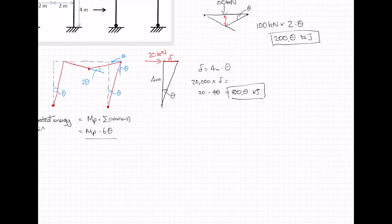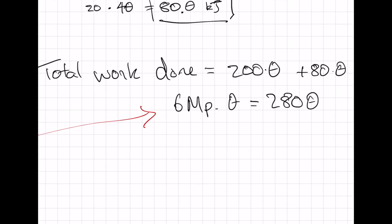So let's equate these. Total work done is equal to 200 theta plus 80 theta, and we equate that to 6 MP theta is equal to 280 theta. That cancels out, so MP is equal to 280 divided by 6 is equal to 46.67 kilonewton meters. That's our final answer.